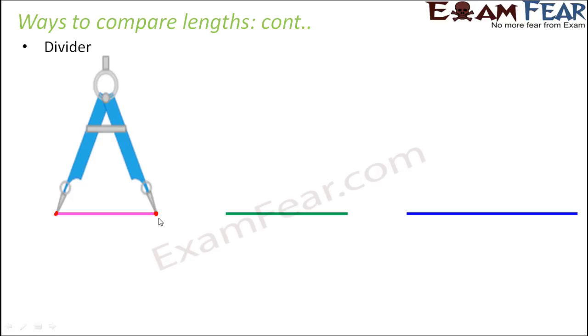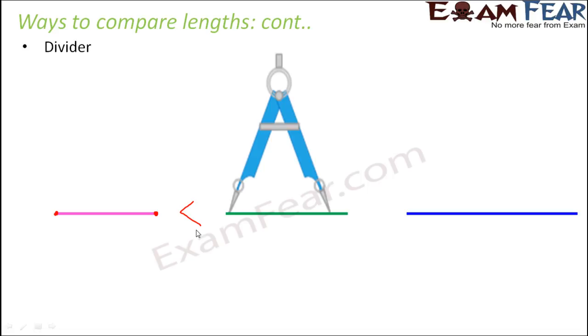So in that way you basically get the length of the line segment in the opening of the divider. Now retain the same opening of the divider, do not alter it. So take the same divider, retain the same opening, and place it on the second line segment. And what do you see? You see that the second line segment is slightly more than the opening of the divider, which shows that the length of the second line segment is more.